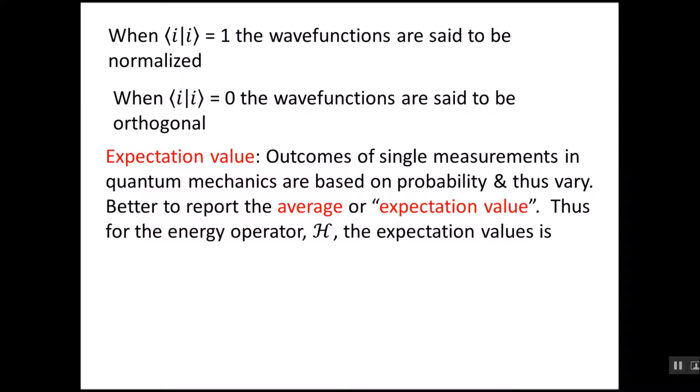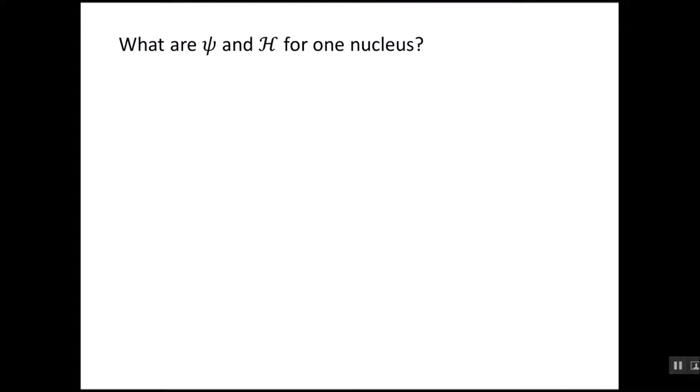One of the interesting things about quantum mechanics is if we take a single measurement, we don't always get the same results. Because the outcomes are based on probability, the measurement result will vary. So it's better to look for an average value, which is often called the expectation value. And if we look at the energy operator of the Hamiltonian, we take the integral of the complex conjugate of the wave function times the Hamiltonian times the wave function, integrated over all space. The term in the denominator is just the normalization factor. This is called the expectation value, and it's the average value of the function. We prefer this because we don't want variable results. We want an average result.